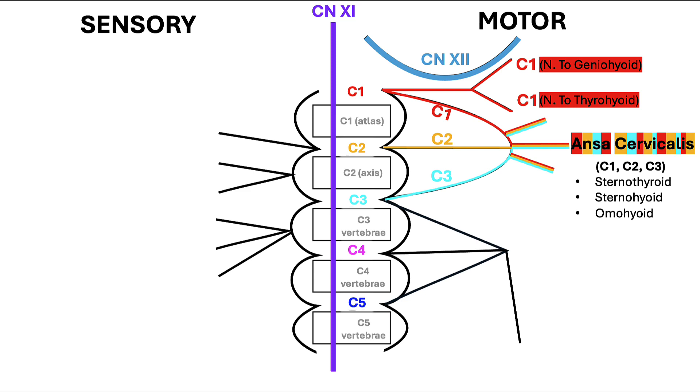It innervates the remainder of the strap muscles in the neck: the sternothyroid, sternohyoid, and omohyoid muscles. Because of how we drew it, we now also know that the ansa cervicalis and its branches are nerves made up of combinations of spinal nerve branches C1, C2, and C3.